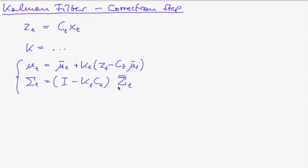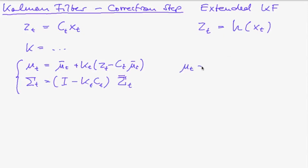The updated covariance is therefore smaller than the predicted covariance. In general, we do not have a linear equation — rather, ct is some nonlinear function of xt. In the extended Kalman filter, we handle this case similarly to the nonlinear transition function. Our new mu is defined as the predicted mu plus the Kalman gain times our measurement minus h of mu_t. So instead of subtracting the linearly transformed mu_t, we subtract the nonlinear function h applied to our predicted mu_t.